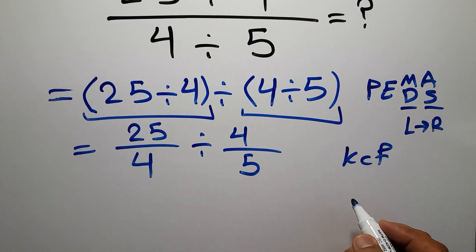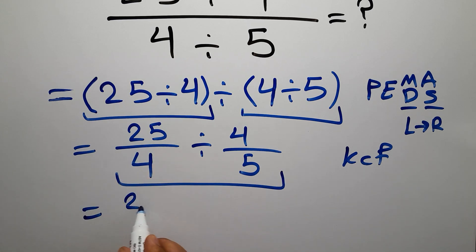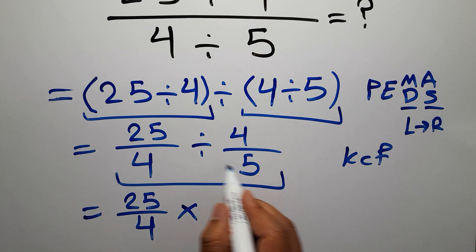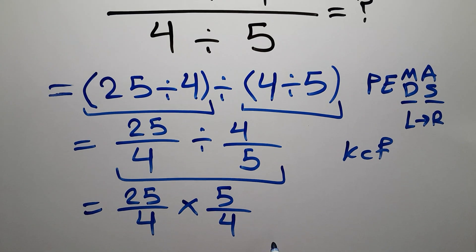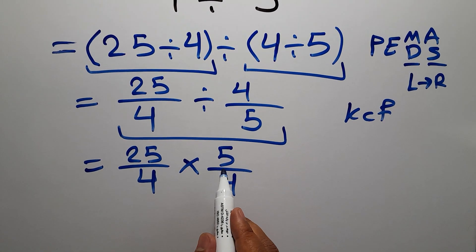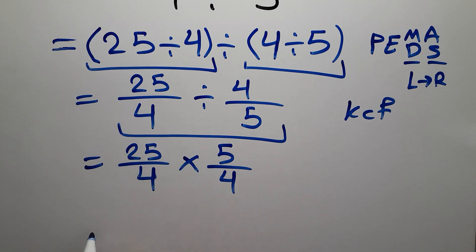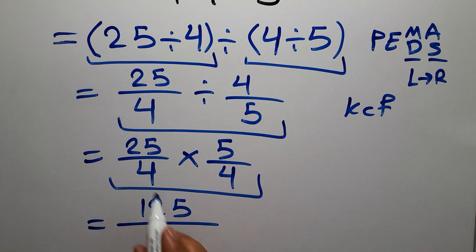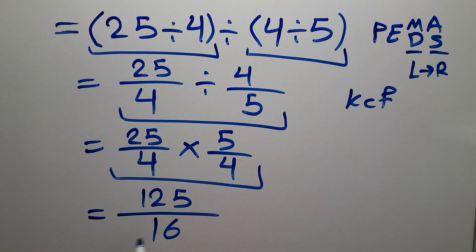According to the KCF rule — K stands for Keep, C stands for Change, and F stands for Flip — we keep the first fraction 25 over 4, change division to multiplication, and flip the second fraction to 5 over 4. So we have 25 over 4 times 5 over 4. 25 times 5 gives us 125, and 4 times 4 equals 16, giving us 125 over 16 as our final answer.